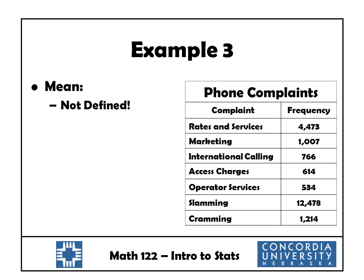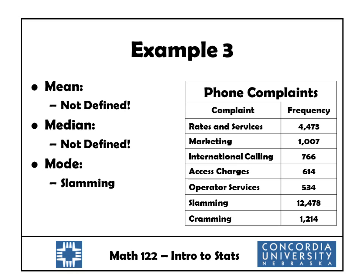We could calculate the mean of the frequency numbers in the right-hand column, but that's not the mean of our sample data. Similarly, to find the median we'd line values up from smallest to largest, but our data are words — you can't do that, so the median is not defined either. However, the mode is defined: slamming occurred 12,478 times, by far the most frequent type of complaint, so the mode is slamming. Just because you see numbers in a table doesn't mean you can calculate a mean or median — those numbers may just summarize the data.